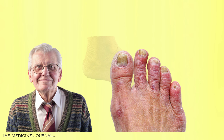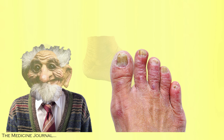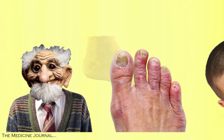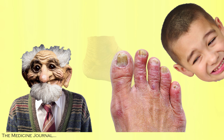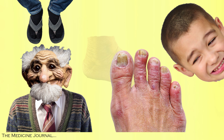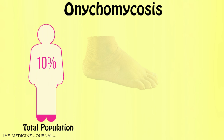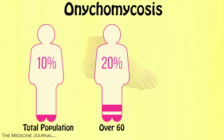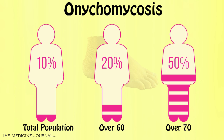Have you ever seen the toenails of your grandfather and thought he might be a troll? Those yellow, misshapen and brittle nails make small children cringe and he has begun wearing socks with sandals. Known as onychomycosis, this unshapely blemish affects about 10% of the total population, 20% of people over 60, and 50% of people over 70.